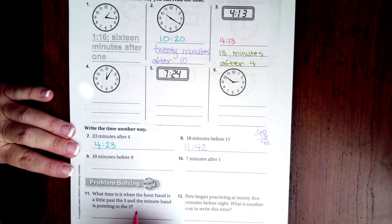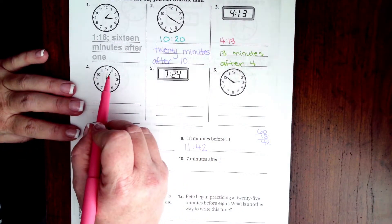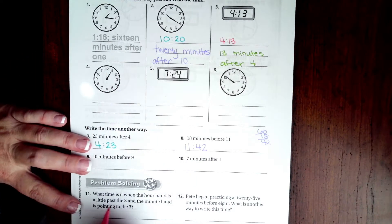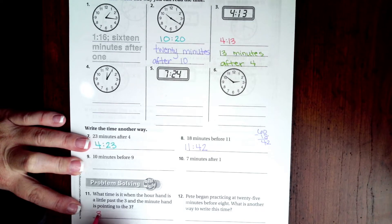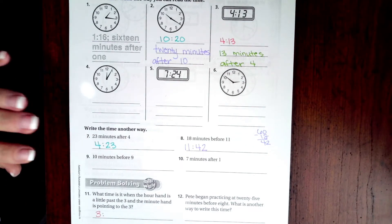What time is it when the hour hand is a little past three and the minute hand is pointing to the three? Let's go back up here and look at these. If the hour hand is pointing to the three or just a tiny bit past three, that means it hasn't touched four yet, so that's going to be three. Now if the minute hand is pointing to the three, that's 5, 10, 15 minutes.